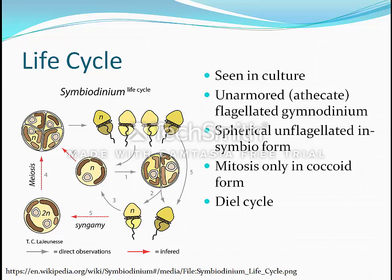Symbiodinium does something really cool: the mitotic stages are on a diel cycle where the coccoid cell divides its nucleus in the dark. Then the cell divides soon after light reaches the cell, releasing two motile cells during the daytime. Towards the end of the day, these motile cells will transform back into the coccoid cell. This is interesting because Symbiodinium's full life cycle has a lot of uncertainties. The genetic diversity suggests sexual reproduction and recombination, but this has yet to be witnessed, as well as tetrad cells made by meiosis, but these are all inferred and haven't been empirically seen.